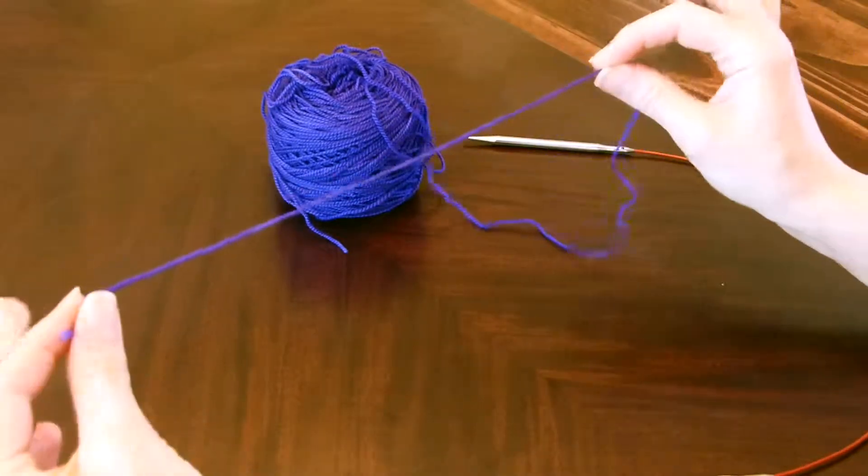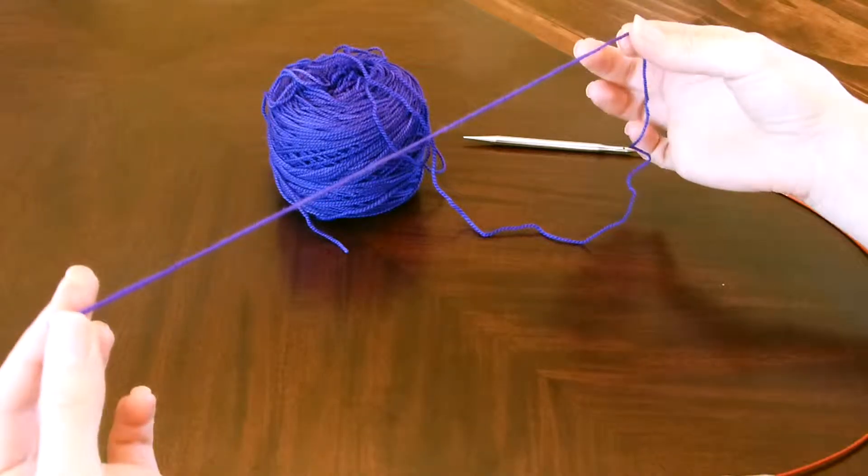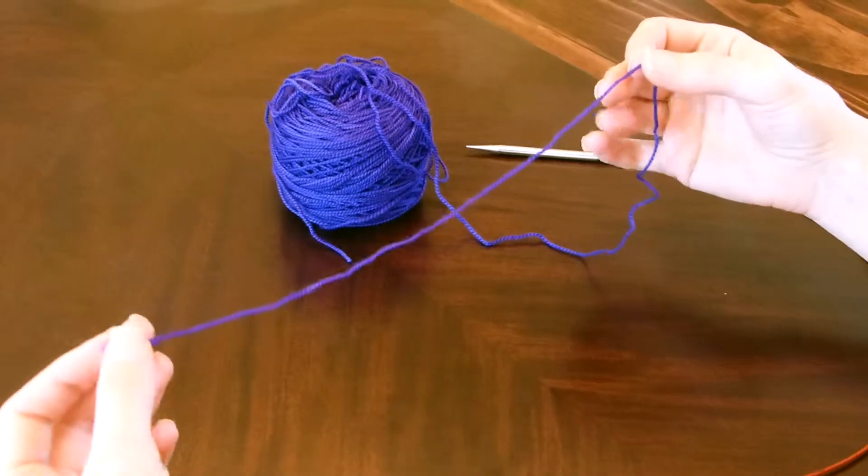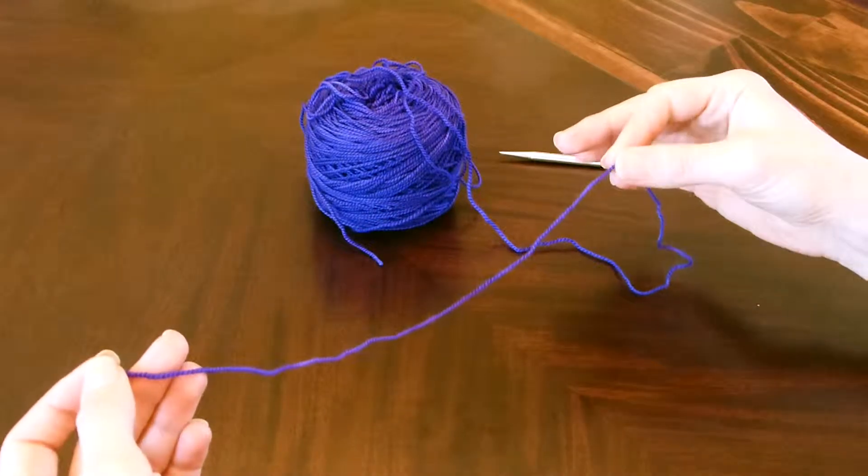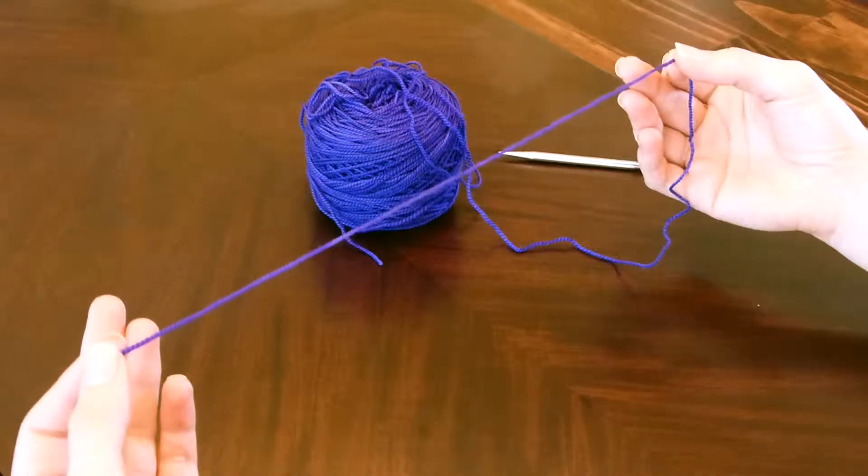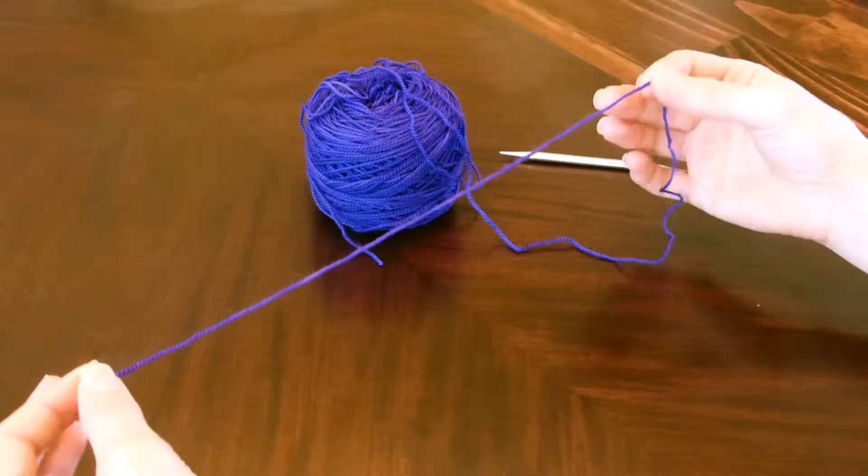We're going to have to leave a tail long enough for about 20 to 30 stitches. So you're going to have to assume how many stitches you will need and leave enough tail for that. Hence the name of the method: long tail cast on.